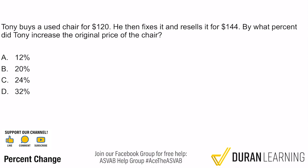Hey, what's going on everybody? Tony buys a huge chair for $120. He then fixes it and resells it for $144. By what percent did Tony increase the original price of the chair?